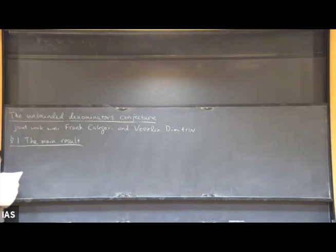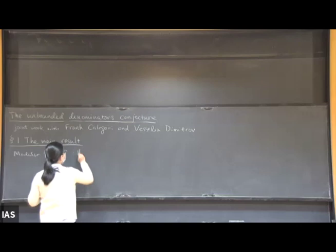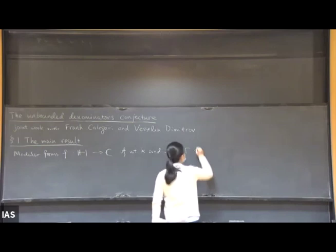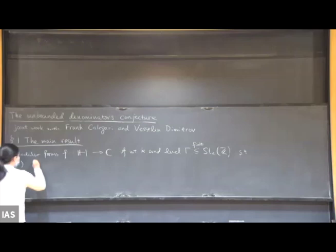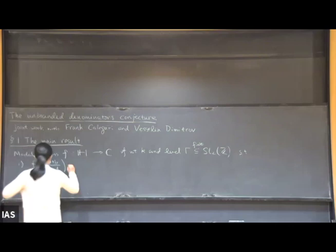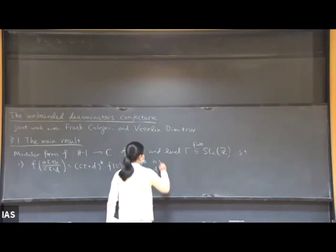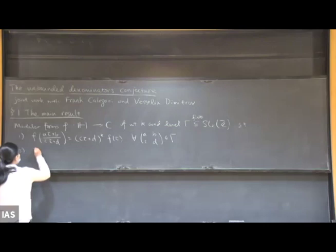For the sake of clarity, I'll spell out the definition of a modular form. Here comes a holomorphic function on the upper half plane of weight k and level gamma. Gamma is a finite index subgroup of SL2(Z) such that it has the transformation rule: f((a*tau + b)/(c*tau + d)) equals (c*tau + d)^k times f(tau) for every element in the level gamma. The second condition is that f is holomorphic at the cusps.